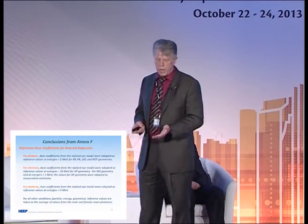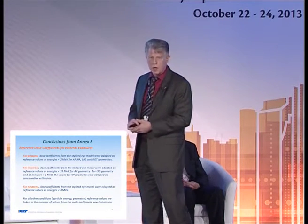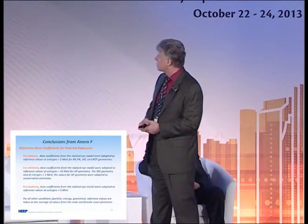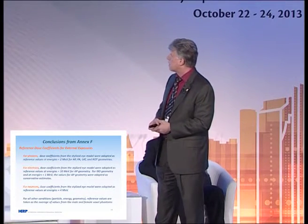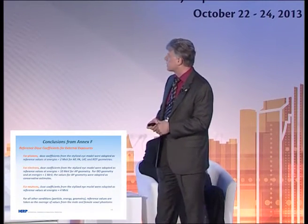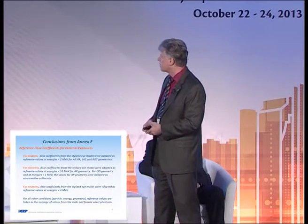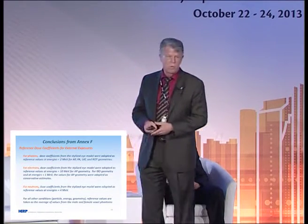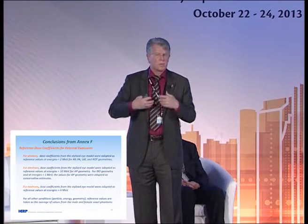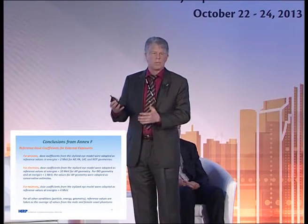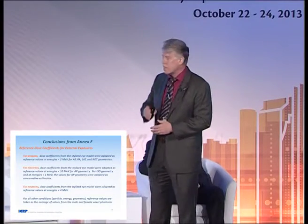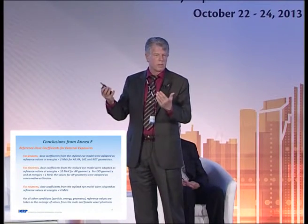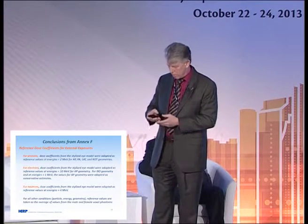The conclusions of annex F: for photons, dose coefficients from the stylized model were adopted at reference energies less than 2 MeV. For electrons, stylized model coefficients were adopted at energies less than 10 MeV for AP irradiation and less than 1 MeV for isotropic irradiation. For neutrons, stylized model coefficients were adopted at reference energies below 4 MeV. This highlights the importance of the more detailed stylized model at lower energy ranges. For energies higher than these values, the voxel phantoms were used, averaging the eye lens dose from the reference male and female, and those became the reference values.